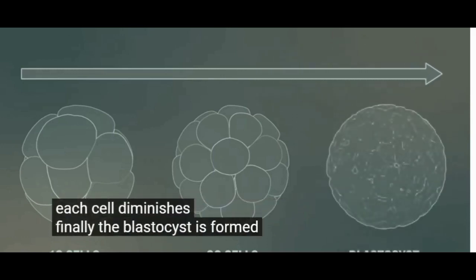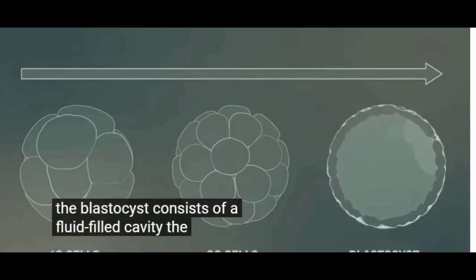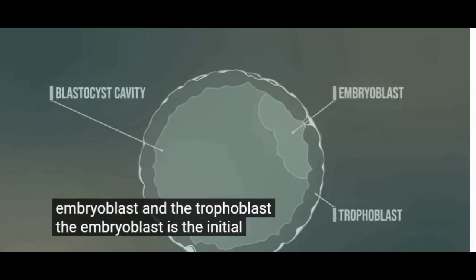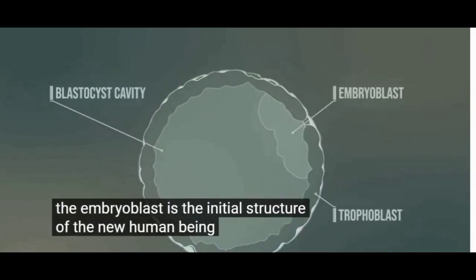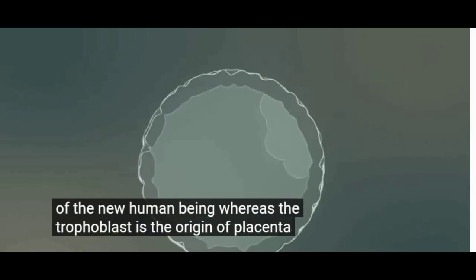Finally, the blastocyst is formed. The blastocyst consists of a fluid-filled cavity, the cells of the embryoblast and the trophoblast. The embryoblast is the initial structure of the new human being, whereas the trophoblast is the origin of placenta and membranes.